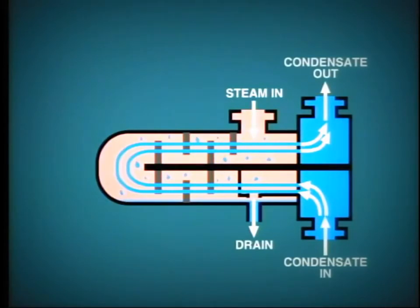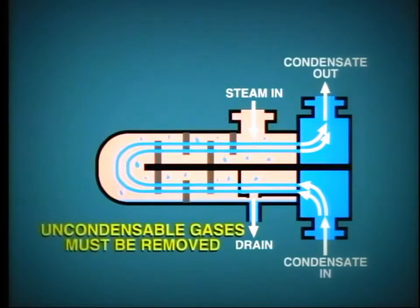As the steam condenses, it releases a small amount of dissolved gases such as oxygen and carbon dioxide. It is important that these uncondensible gases be removed, otherwise they will collect around the tubes and provide a resistance to the transfer of heat. The gases are drawn off through the vent system, which is piped back to the condenser.